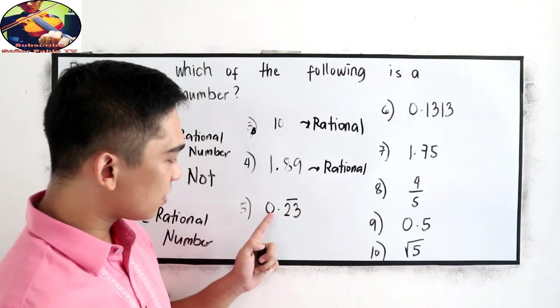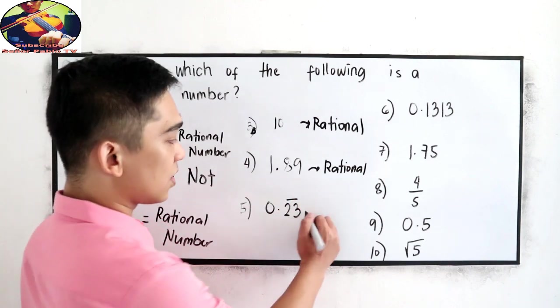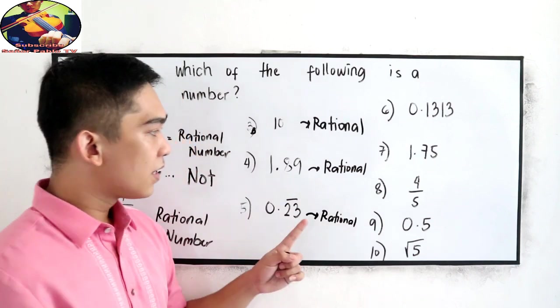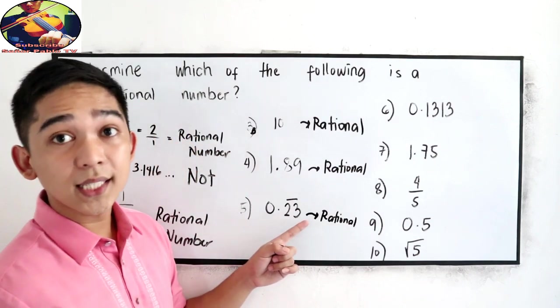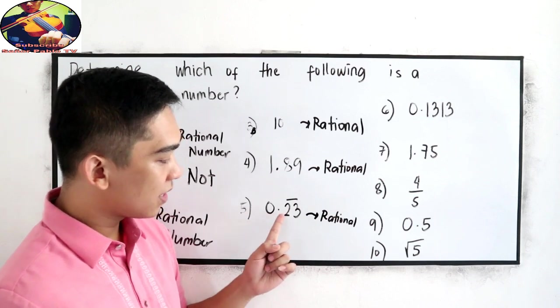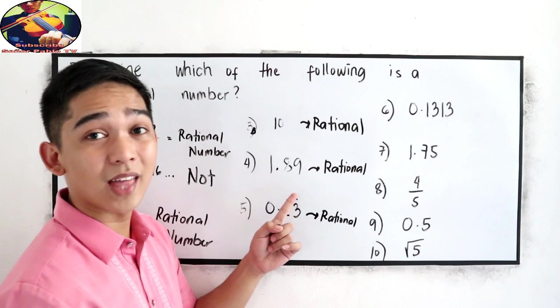Number 5, 0.23 with the bar. So, this is a rational number. Later on, we're going to write how to simplify a decimal with the bar on top of the number.